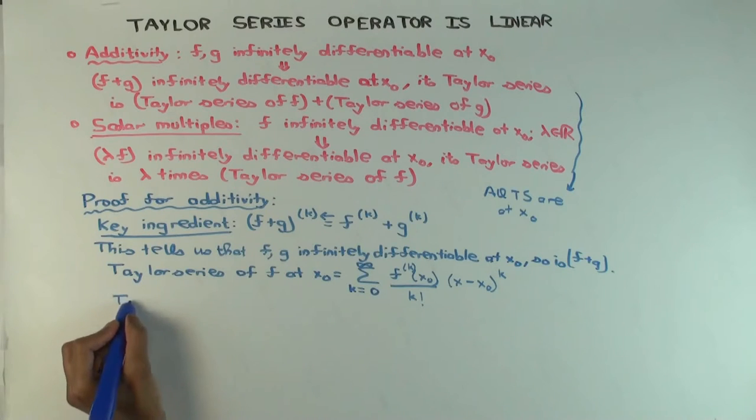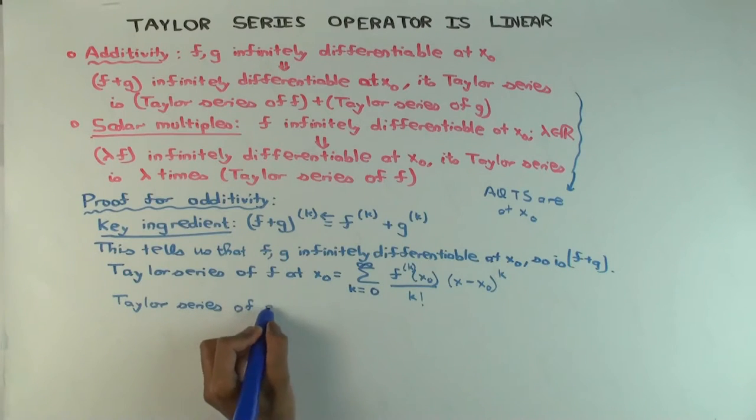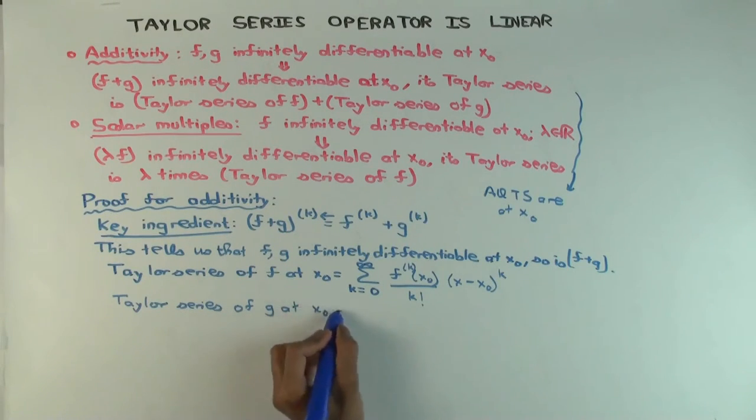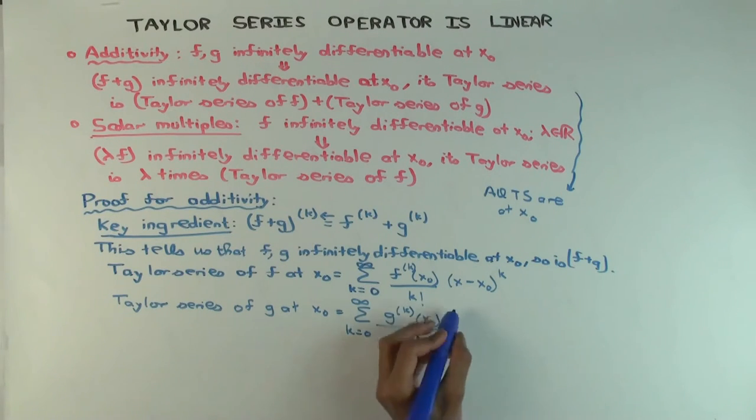Okay. The Taylor series for g at x0, what's that? Just replace the f with g.